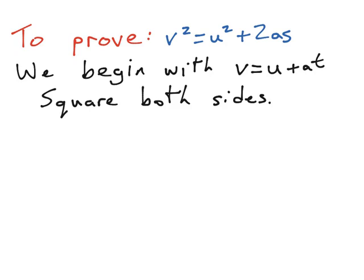The letters stand for v is your final velocity, u is the initial or starting velocity, a is acceleration, and s is the displacement.